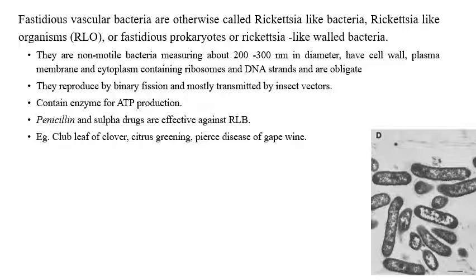Penicillin and sulfur drugs are effective against this rickettsia-like bacteria. Examples that come under this group include club leaf of clover, citrus greening, and Pierce's disease of grapevine — these are the bacteria that come under rickettsia-like organism or fastidious vascular bacteria.